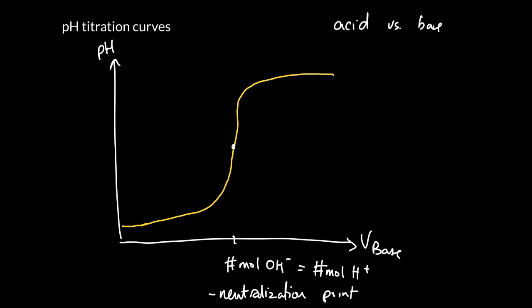Or more formally, the equivalence point. In fact, I can plot it here on the pH curve itself. So this is the equivalence point, I've added equivalent moles of base and acid, assuming it's a one to one reaction. The pH actually is slightly different depending on the type of acid versus the type of base.